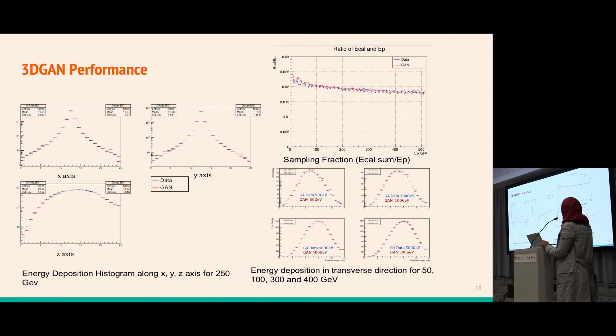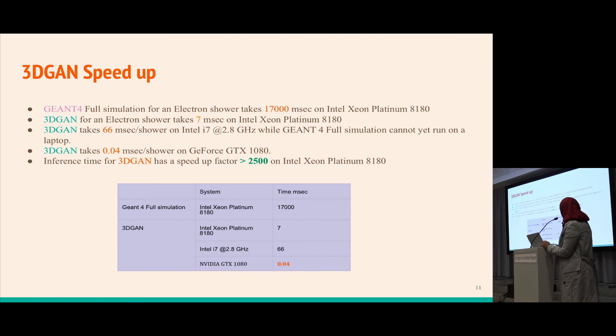At the top we see the sampling fraction, which is the total energy deposited by a particle in the calorimeter relative to the primary energy. The GAN and data images follow similar behavior. I've included plots for different energies from 50, 100, 400 and 500 GeV. The images produced by GAN are within 10% of images from actual data.